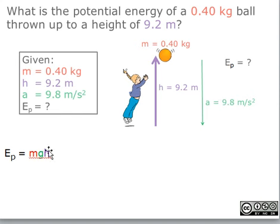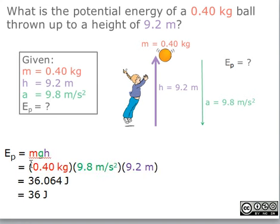For this calculation, we are using the formula potential energy equals mass times gravity times height. We then substitute the given numbers, and we get 0.4 kilograms times 9.8 meters per second squared times 9.2 meters. We then get an answer of 36.064 joules, and we round off to a final answer of 36 joules.